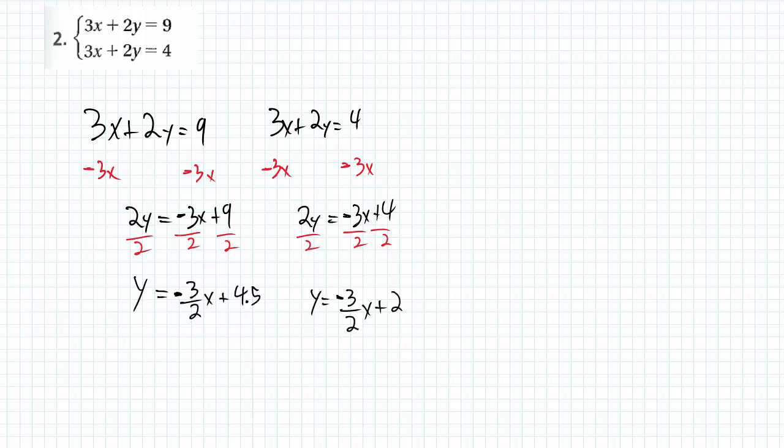So I'm going to solve this one again by graphing. I don't like them being written in standard form if I want to graph them. So I get the y by itself. You can see here I'm putting them in slope-intercept form really quickly. I notice that they have the same slope. Well, if they have the same slope, they're going to be parallel lines, but I'll graph them anyway.